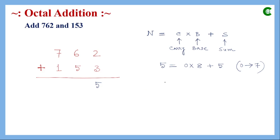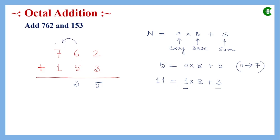Now six plus five equals eleven. Eleven represented in this format: base is eight, so it is 1 × 8 + 3. In this position we write three, and the carry is one, which is forwarded to the next significant bit.